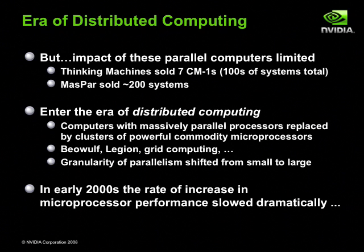In the early 2000s, the rate of increase of microprocessor performance slowed dramatically. As a result, building more powerful clusters meant building larger clusters, which negatively affected scalability, space, and power requirements. This is where the GPU enters the picture.